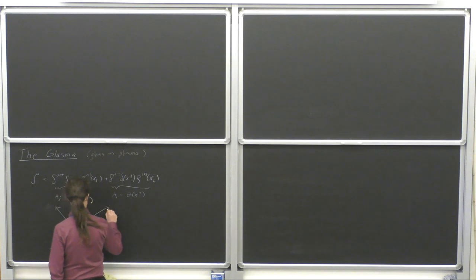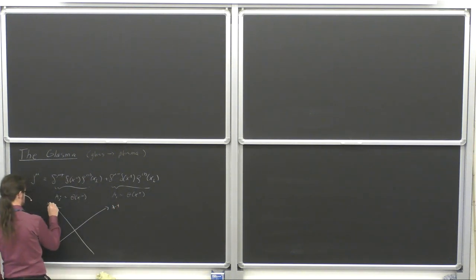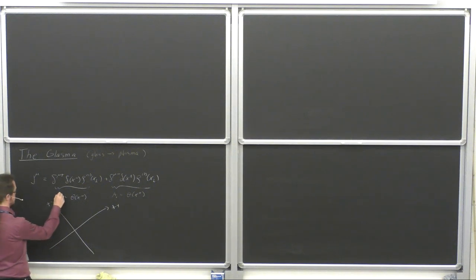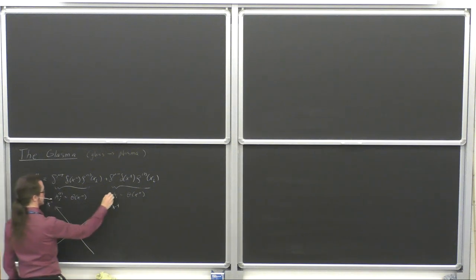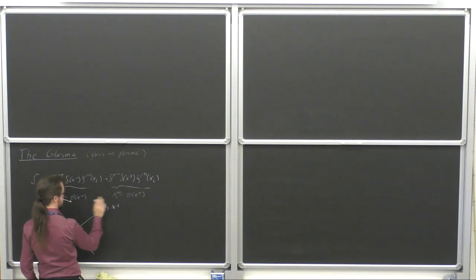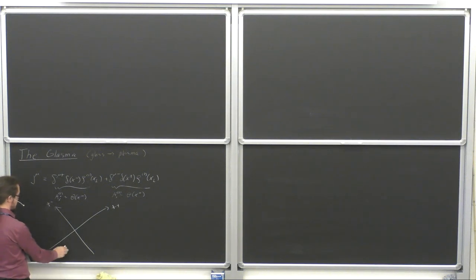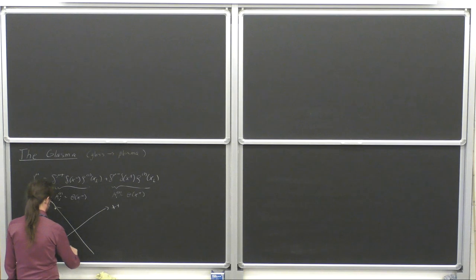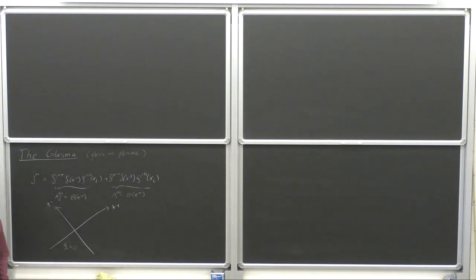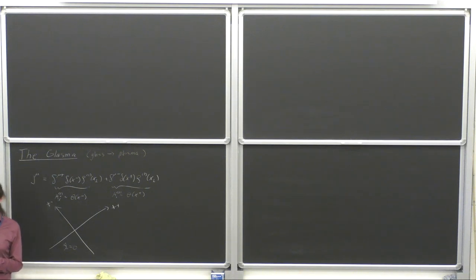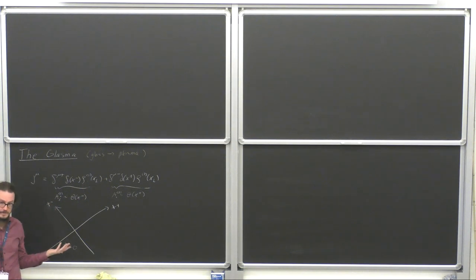Let me draw my favorite spacetime diagram. This is the X plus axis, this is the X minus axis. So this is A1 and this is A2 — these are two pure gauge fields that don't know anything about each other. Here we have chosen a gauge where there's nothing here; in this part of spacetime we're sitting here, one nucleus is coming towards us, the other nucleus is coming towards us, we haven't seen the nuclei at all, so there's nothing there.